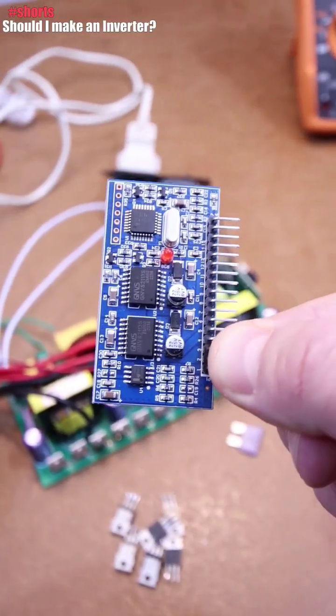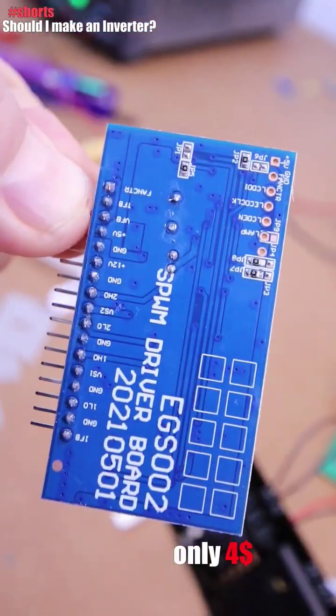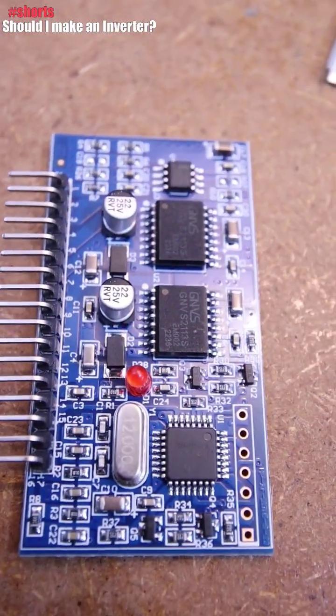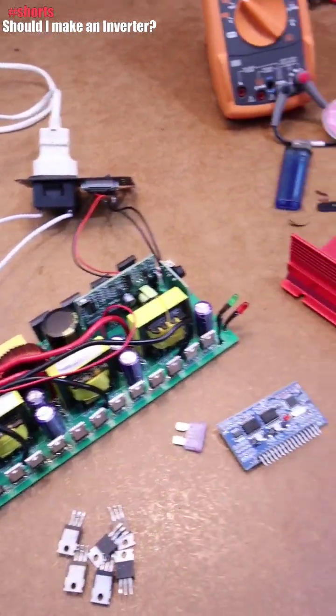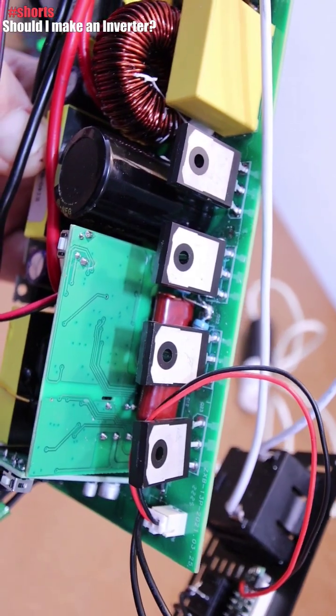But I do have this PCB, which is also a full sine wave inverter PCB. And my idea is to use all these components here in order to not waste any more money, get them out and use it for my own circuit of an inverter.